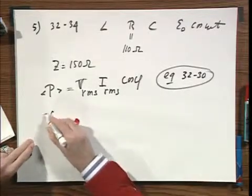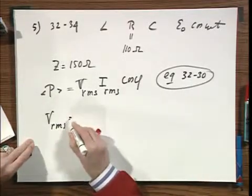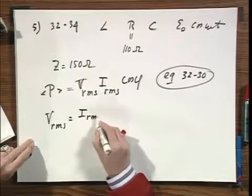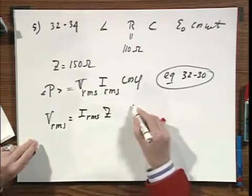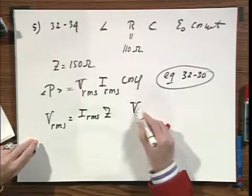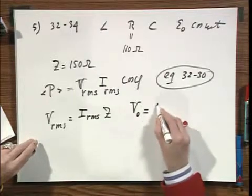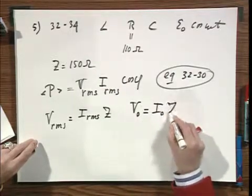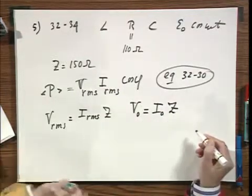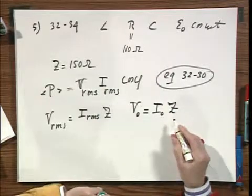Now V RMS is obviously I RMS times Z for the simple reason that V zero equals I zero times Z. That's the way it is defined.